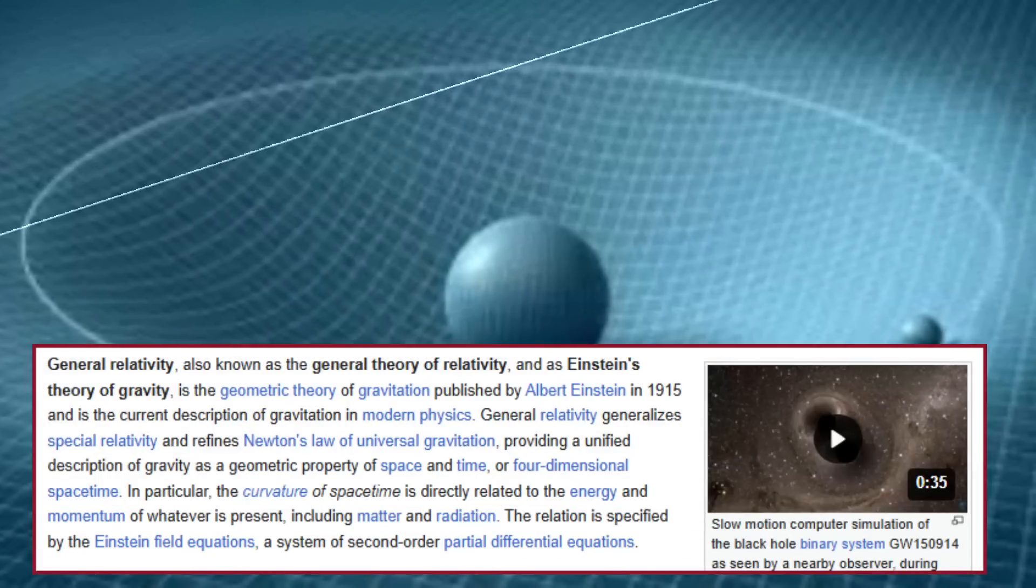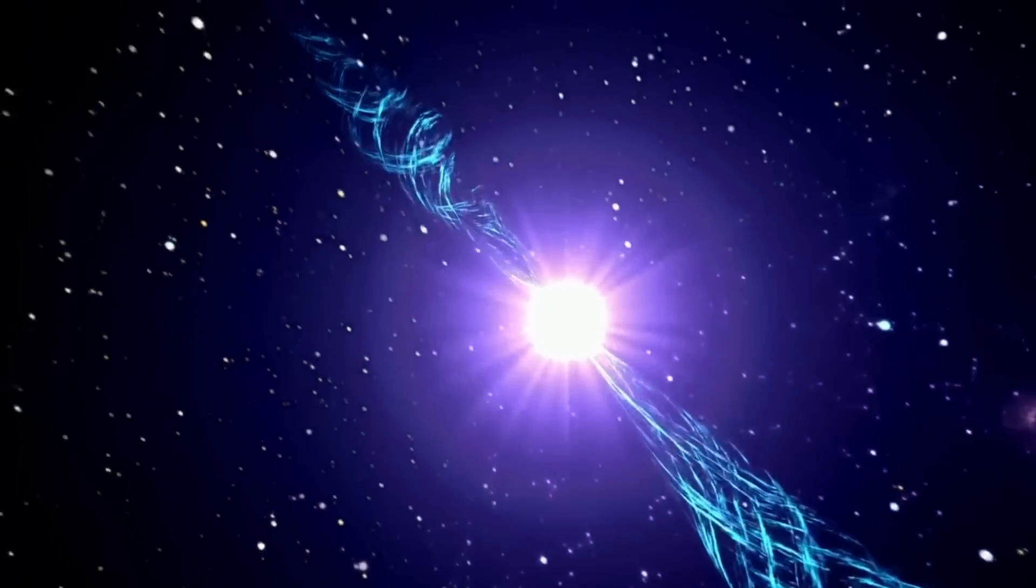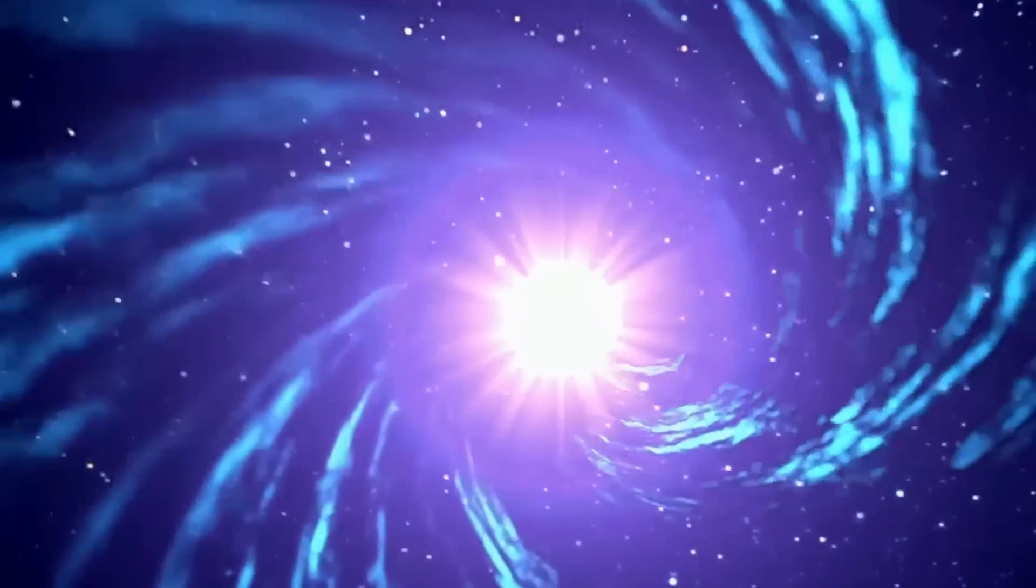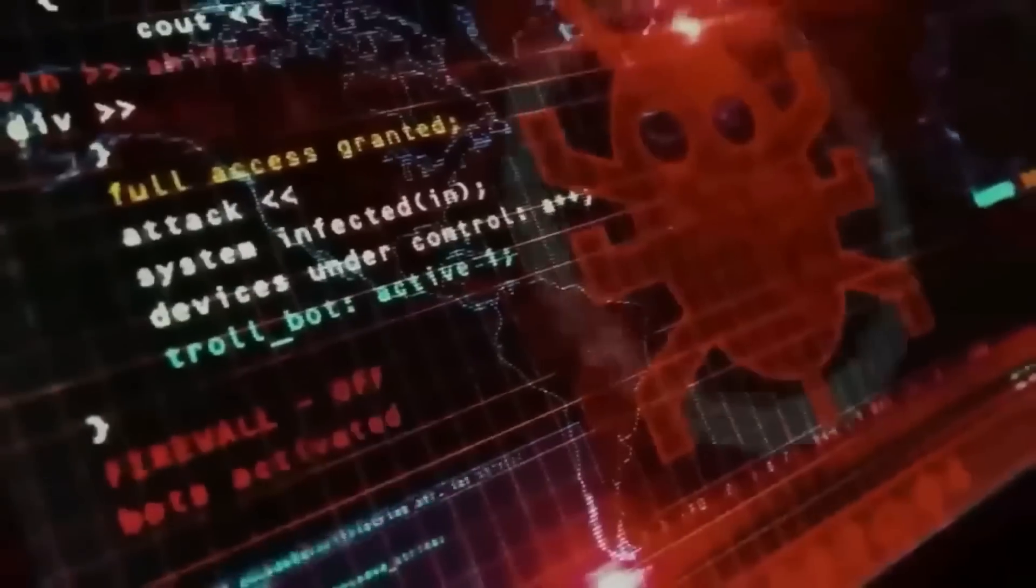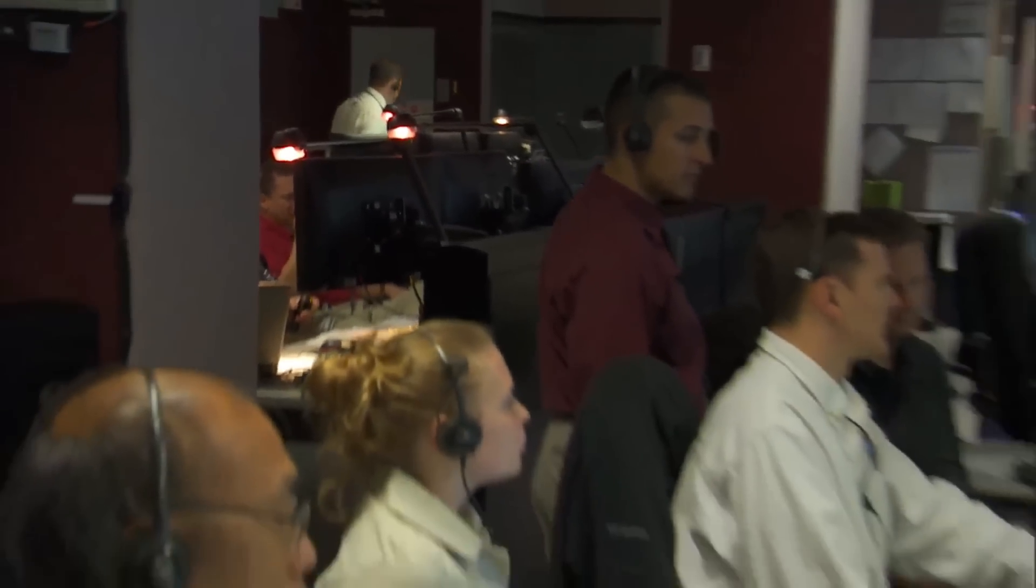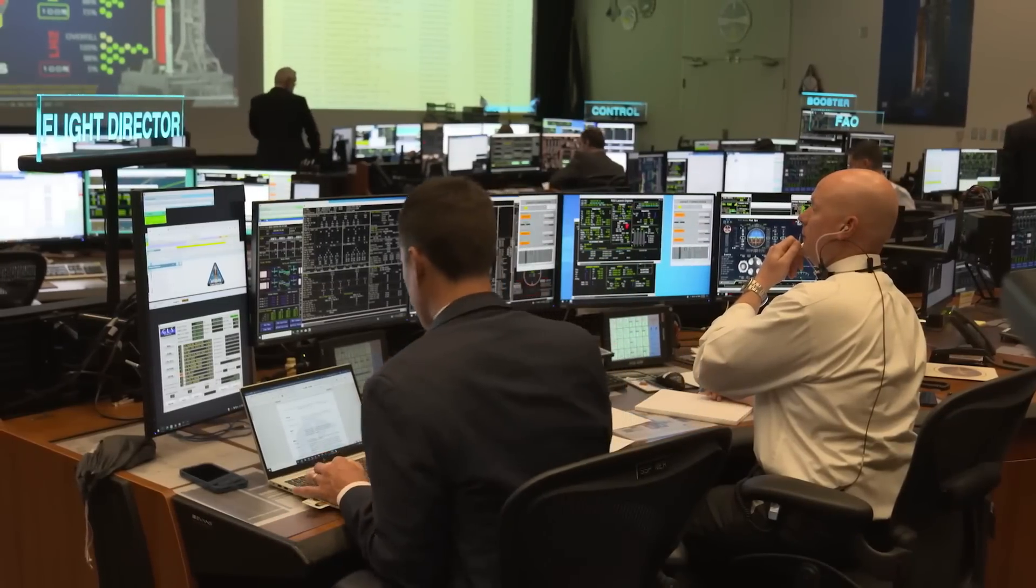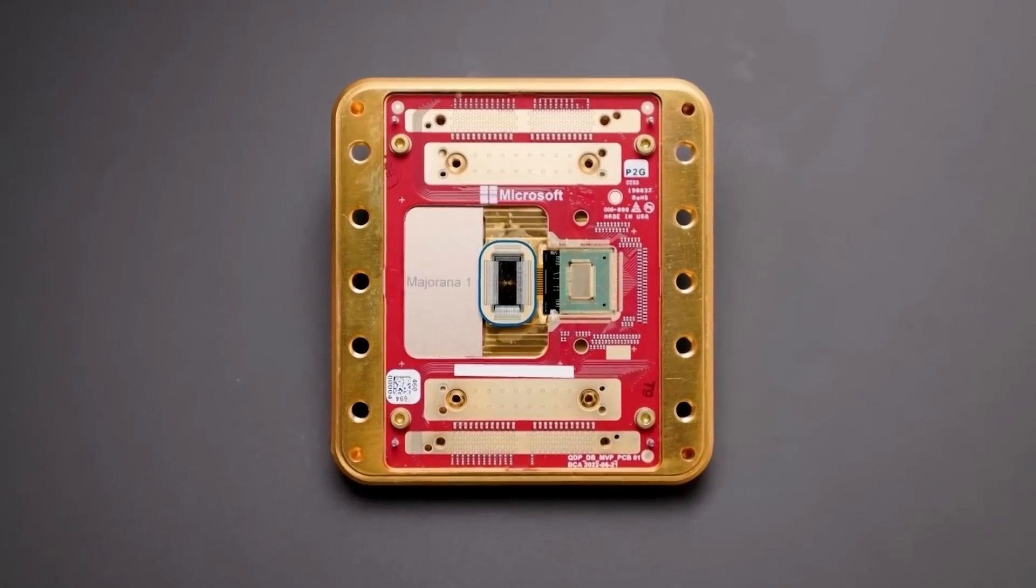Wormholes and hidden dimensions. Another tantalizing possibility is that the observed anomaly might indicate the presence of a wormhole. Wormholes are hypothetical tunnels through space-time that could, in theory, connect distant regions of the universe or even different universes altogether. While wormholes have long been a staple of science fiction, their existence remains purely theoretical. However, the detection of an energy signature that doesn't conform to known physics might be the first hint that such phenomena are real. Alternatively, some theorists speculate that the signal could be evidence of hidden dimensions, additional spatial dimensions beyond the three we experience daily. This would not only revolutionize our understanding of black holes but also open up entirely new realms of physics.